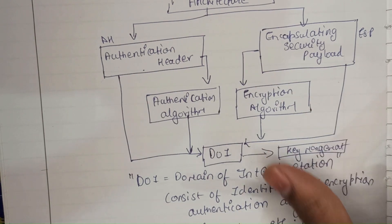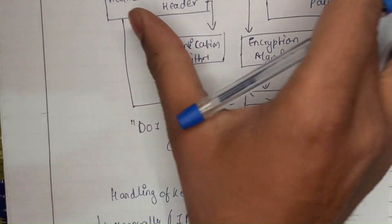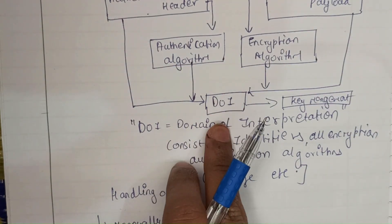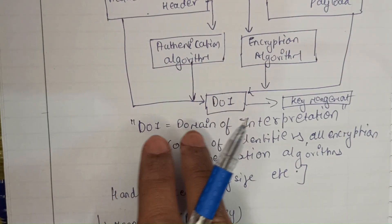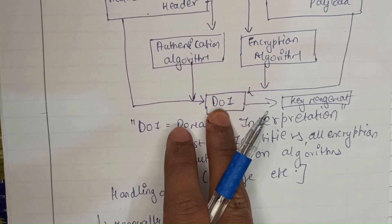Both the algorithms are connected to DOI. DOI is nothing but domain of interpretation. What does this mean?